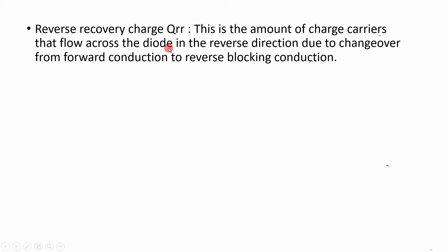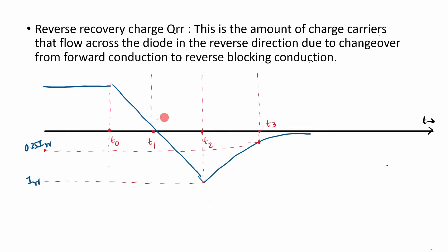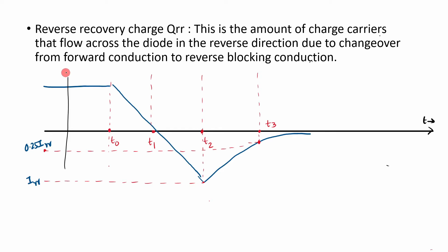So if you look at the graph it will be more clear. Here we have the graph — this is the current Id on the y-axis and this is the time t on the x-axis. We already saw all these time definitions in the previous video. At t0, the voltage goes from forward condition to reverse condition, so the current does not change instantaneously — it gradually reduces by a factor of di/dt.